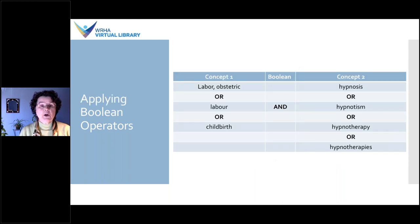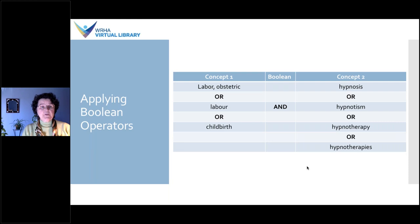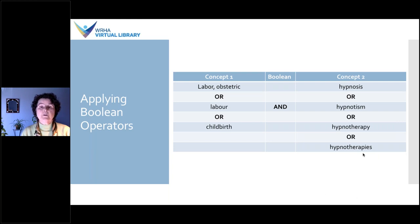Going back to our term mapping chart, this is how you apply the Boolean operators: all terms for the same concept — different spellings, different names, plural values — you would OR together. So you OR all the childbirth terms together and you OR all the hypnosis terms together, and to combine the two concepts you would use AND.